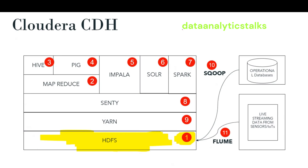Just to remember, under Cloudera CDH we have HDFS, MapReduce, Apache Hive, Apache Pig, Apache Impala, Apache Solr, Spark, Sqoop, Flume, Sentry, and YARN. By the end of this playlist, you will have a very good understanding about each and every component of CDH, which will open you to big data technologies and platforms and help you place yourself in a better position in the data analytics world. Stay tuned, wait for the next video — we will be focusing on HDFS, Hadoop Distributed File System. Okay, bye, thank you.